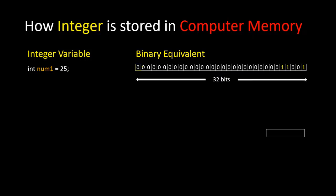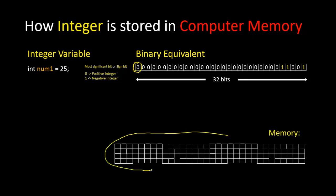Here we have 32 bits, and the leftmost bit is called the most significant bit or sign bit. If the value of this bit is 0, that means this is a positive integer. If we have a 1 here, that means it is a negative integer. For this binary value, this is a positive integer because we have 0 here.